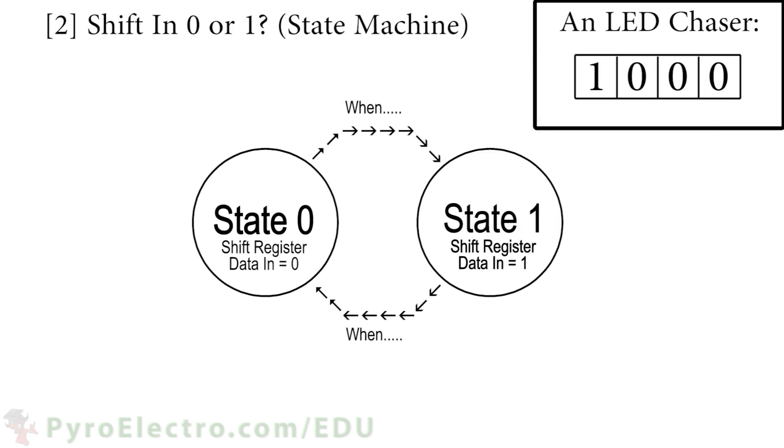Next, we need to build what is called a state machine, and here is what is called a state diagram. Each state in a state diagram has an output and an input that tells it to change its state. In this case, state zero will always output logic zero to the shift register, and state one will always output a logic one to the shift register.